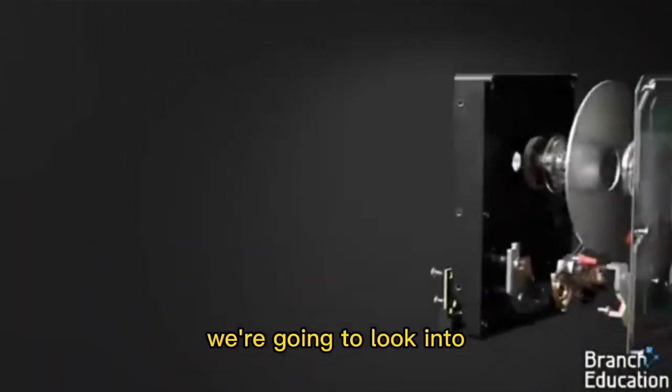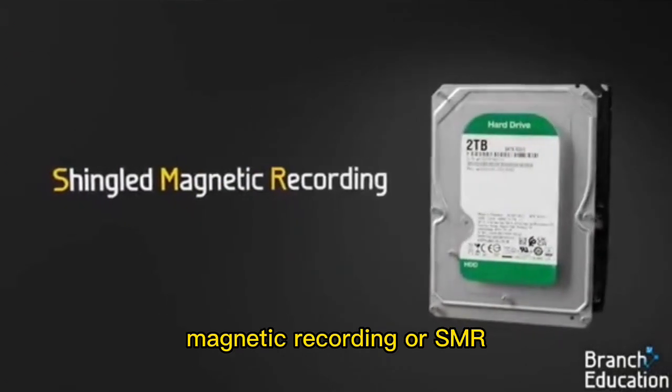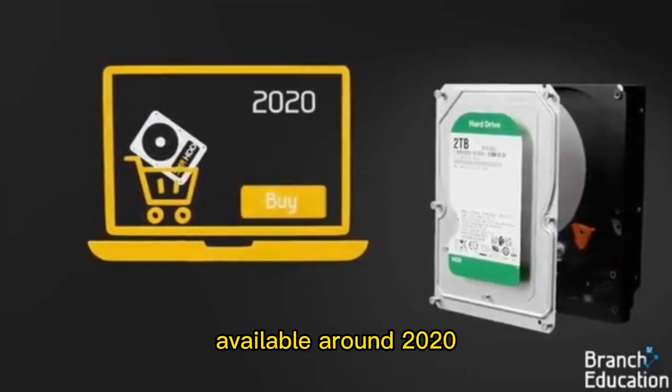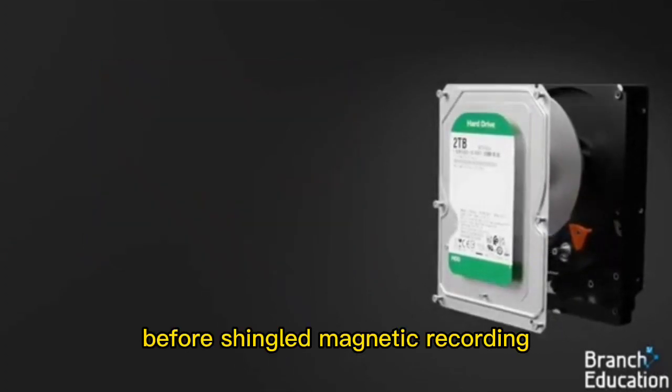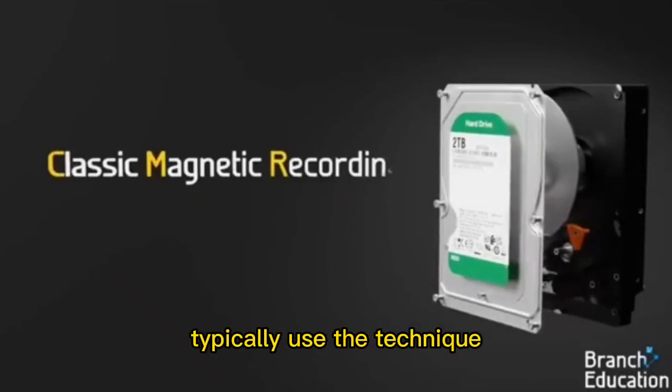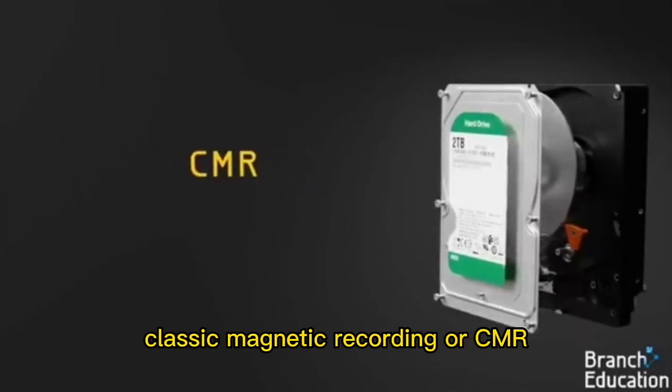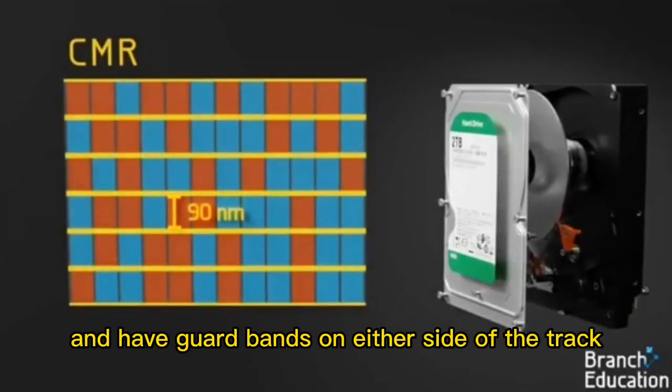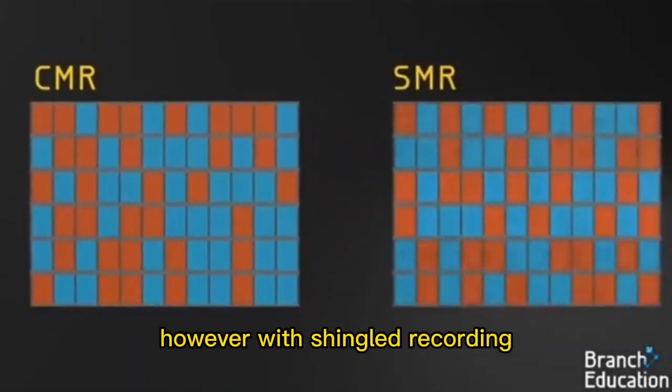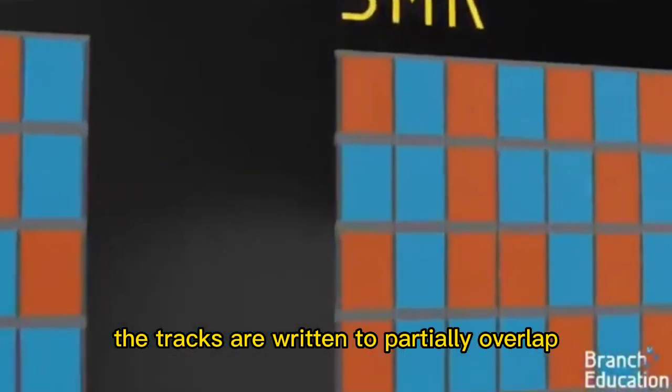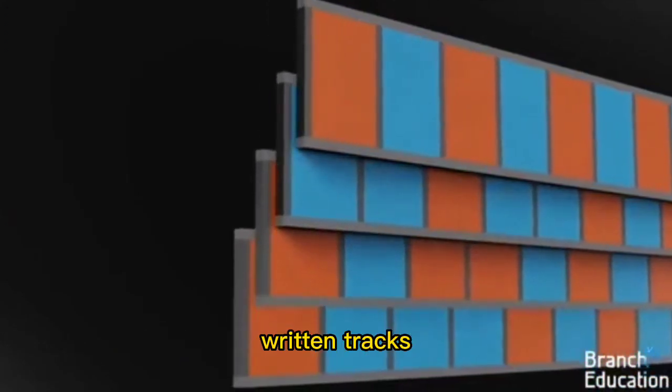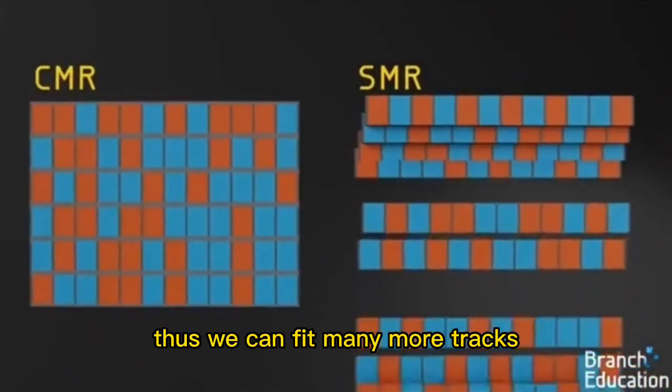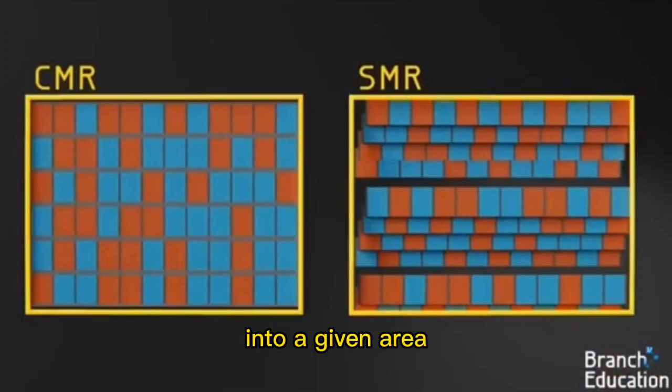The next advancement we're going to look into is called shingled magnetic recording, or SMR, which started being commercially available around 2020. Before shingled magnetic recording, hard drives typically use the technique classic magnetic recording, or CMR, where the tracks of data are 90 nanometers wide and have guard bands on either side of the track. However, with shingled recording, the tracks are written to partially overlap with previously written tracks, with no guard bands to separate each track. Thus, we can fit many more tracks and much more data into a given area.